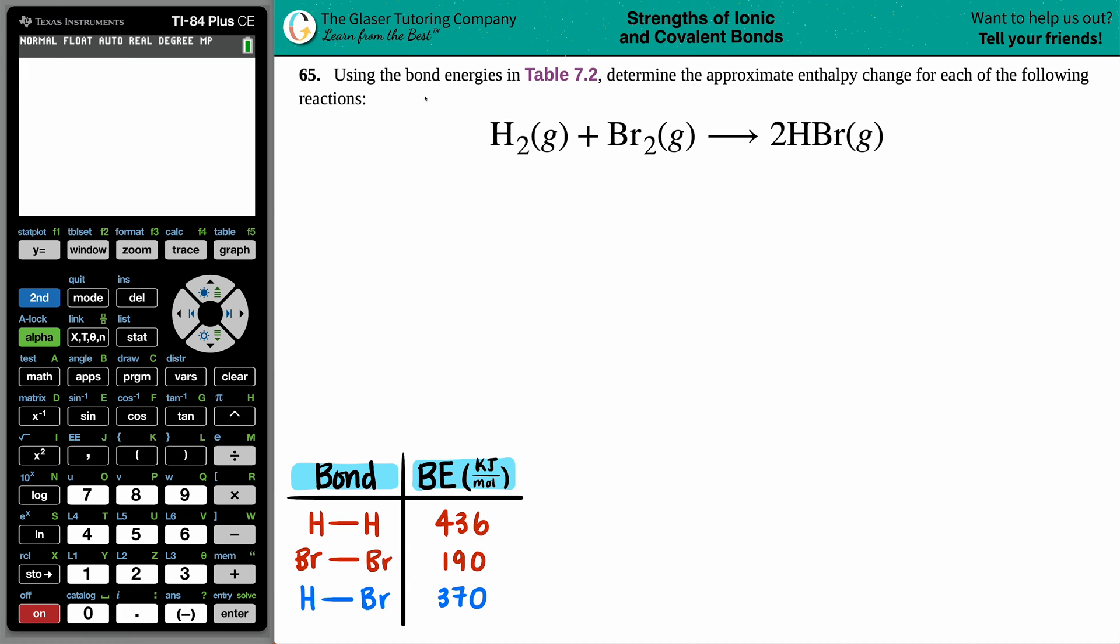Number 65. Using the bond energies in table 7.2, determine the approximate enthalpy change for each of the following reactions. And then we have H2 gas plus Br2 gas yields 2 HBr.